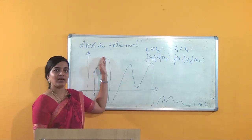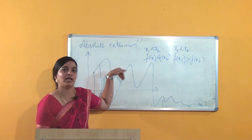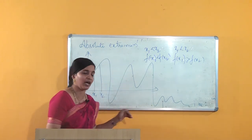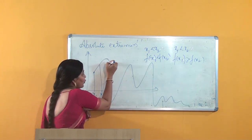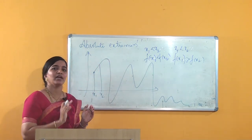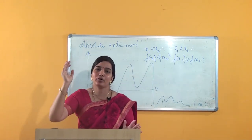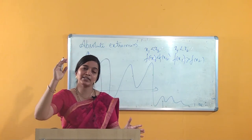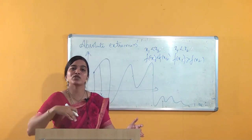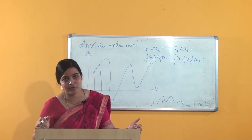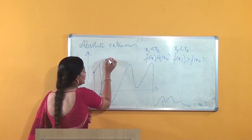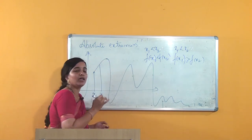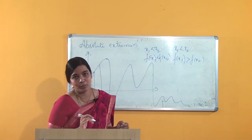Suppose the reverse case happens: I take two points where x1 is less than x2, but f(x1) is greater than f(x2) — then that is a decreasing function. So the graph is first increasing, then I get a decreasing graph. I get a turning point here, where the increasing graph turns to a decreasing graph — that point is nothing but the critical point.